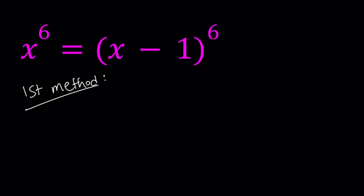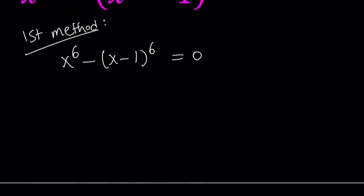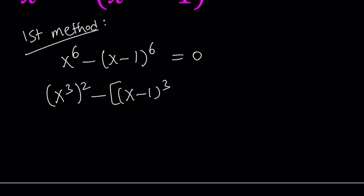For the first method, let's go ahead and put both of these on the same side. I would like to use difference of two squares. I'm going to write the first expression as x cubed squared, and the second one as x minus 1 cubed squared. And the difference is equal to zero.